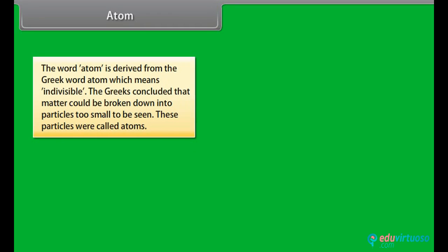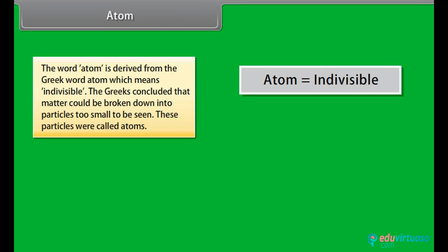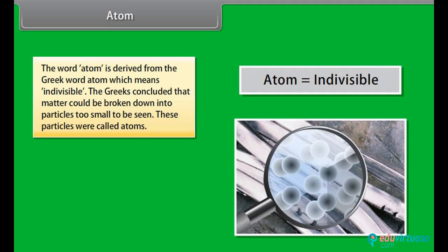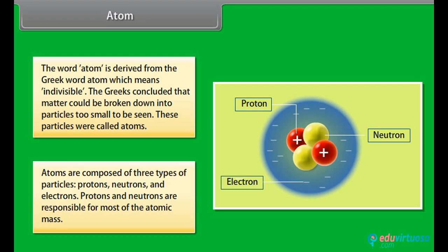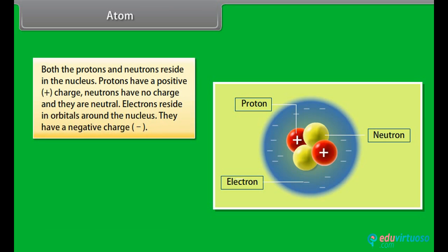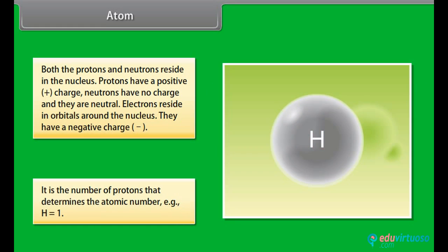Atom. The word atom is derived from the Greek word atom, which means indivisible. The Greeks concluded that matter could be broken down into particles too small to be seen. These particles were called atoms. Atoms are composed of three types of particles: protons, neutrons and electrons. Protons and neutrons are responsible for most of the atomic mass. Both the protons and neutrons reside in the nucleus. Protons have a positive charge. Neutrons have no charge and they are neutral. Electrons reside in orbitals around the nucleus. They have a negative charge. It is the number of protons that determines the atomic number, that is, H is equal to 1.